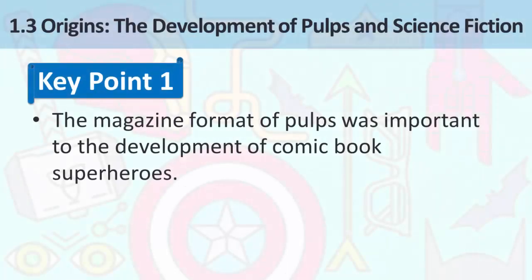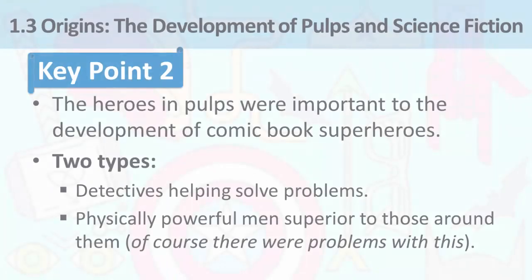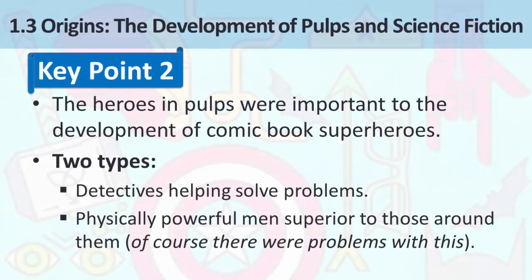Here's a key point. The magazine formats of pulps were important to the development of comic book superheroes. Key point two: the heroes in pulps were important to the development of comic book superheroes. There are two types of heroes: detectives helping solve problems, and physically powerful men superior to those around them. Some of the heroes that appeared in the pulps included the Continental Op, a detective — Op is short for operative — Tarzan, the white man in the jungle hero, and Doc Savage.